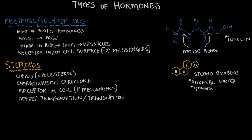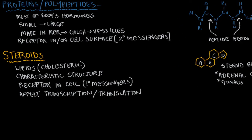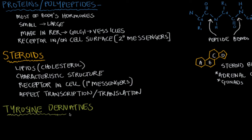So we've got steroids and proteins and polypeptides. The third major type of hormones by structure are tyrosine derivatives. Tyrosine derivatives come from the amino acid tyrosine. You might wonder why these get their own class if they also come from an amino acid. What makes them special is: A, they're made of just one amino acid — tyrosine is manipulated to make these hormones; and B, these hormones can sometimes act like proteins and polypeptides and sometimes act like steroids. So they really get their own class.